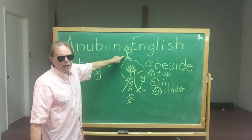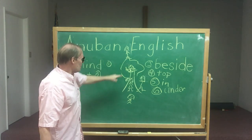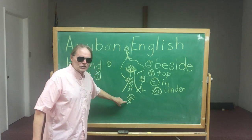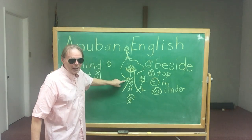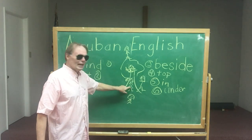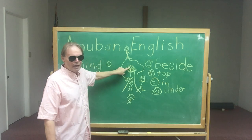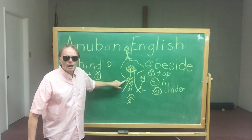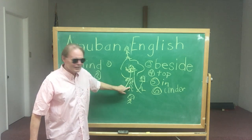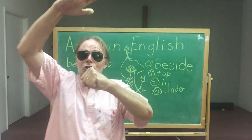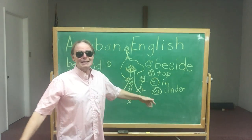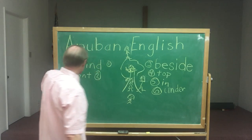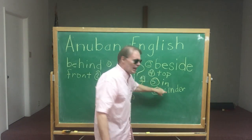This girl here is — on top! She's on top of the tree. And this girl right here is in the tree. Have you ever been in a tree? Yes! And this girl is under — under the tree. And this girl is behind. And this girl is beside. And this girl is in front. So we have on top, in, under, behind, in front, and beside. We should do something really quick: behind, in front, beside, on top, in, and under. Anything else you can think of?